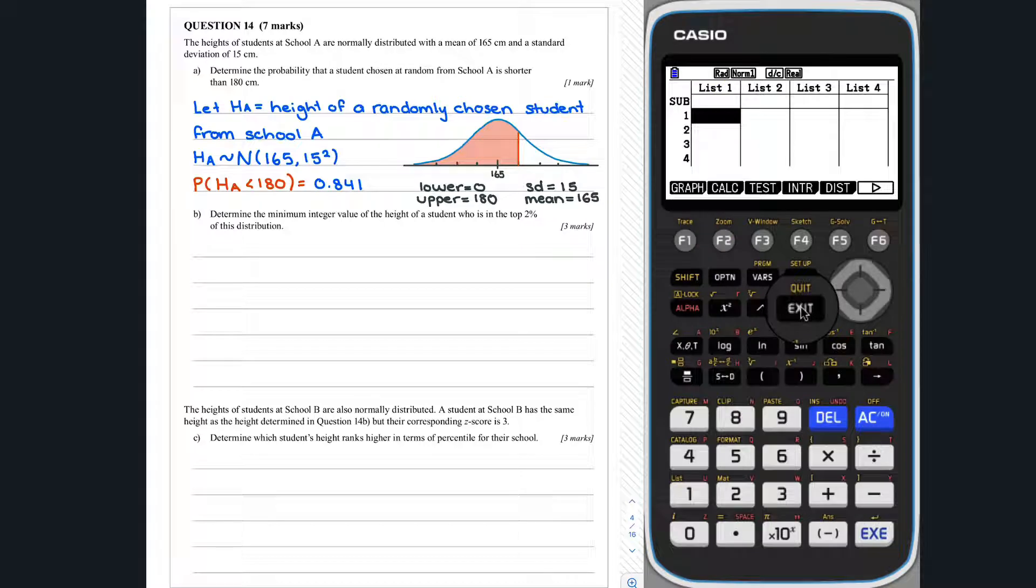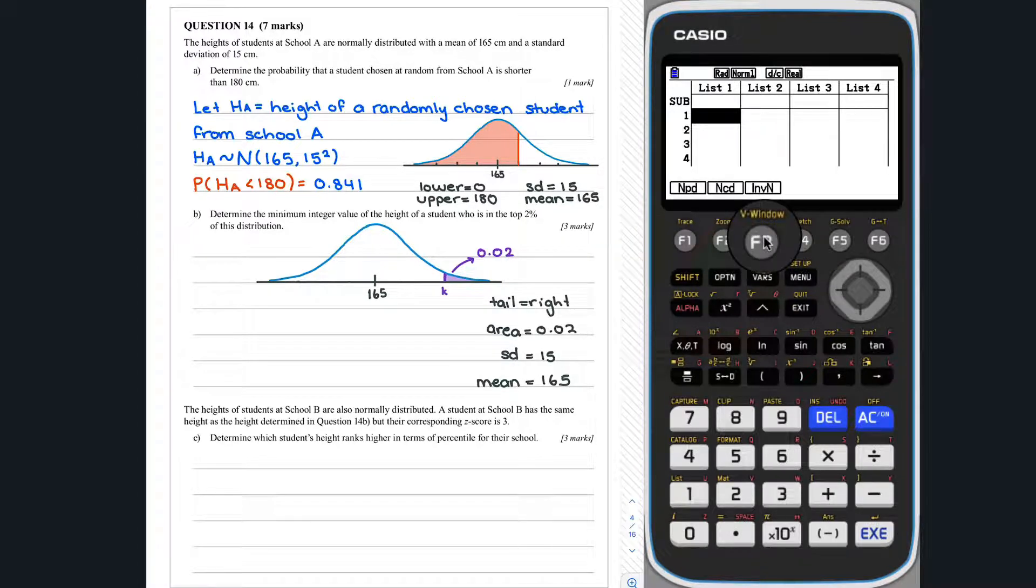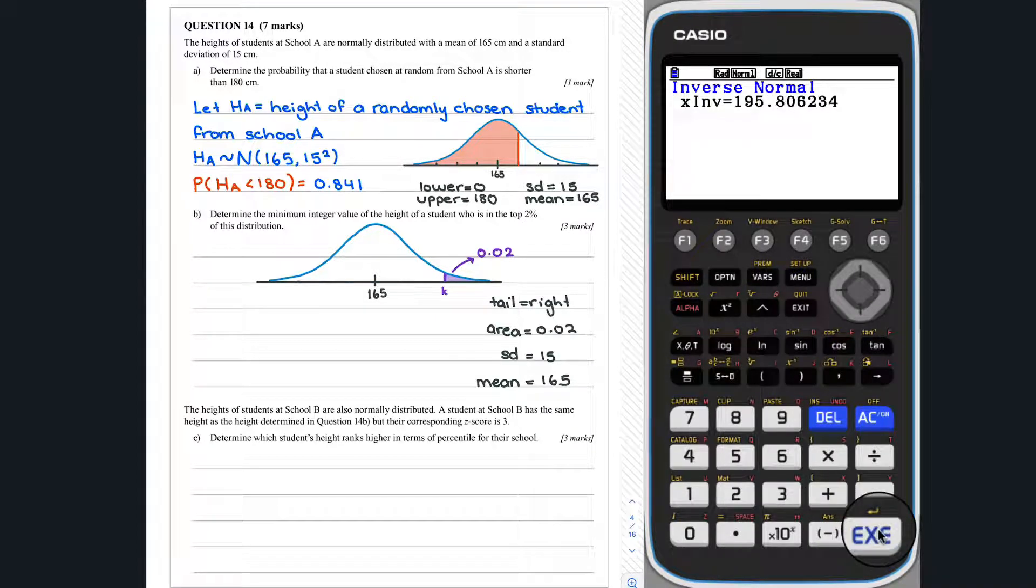Question 14, part B. To answer this question, we need to determine the value of K, where K is the shortest student who is in the top 2% of this distribution. We can use the inverse norm function to determine K. So, we find K to be 195.8. But the question asks us to find the smallest integer value. So, the smallest integer height of the shortest student in the top 2% of this distribution is 196 centimetres.